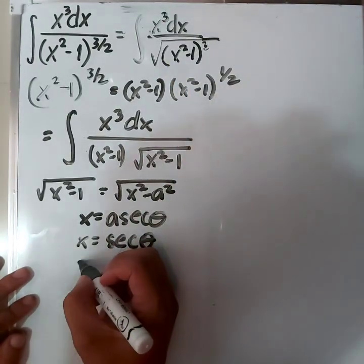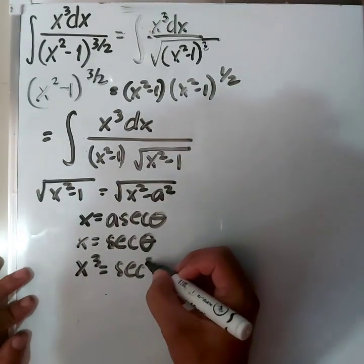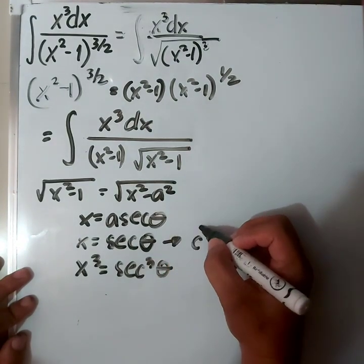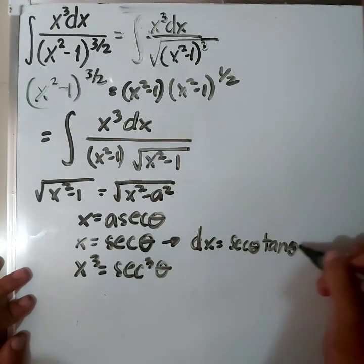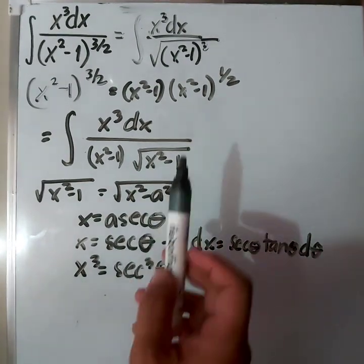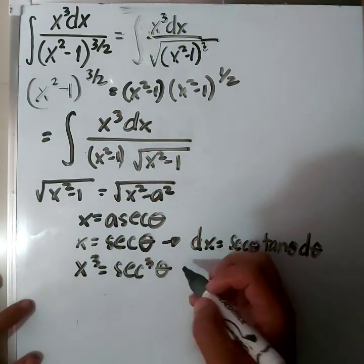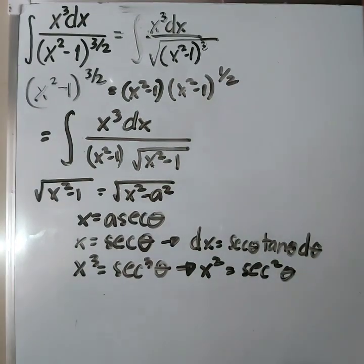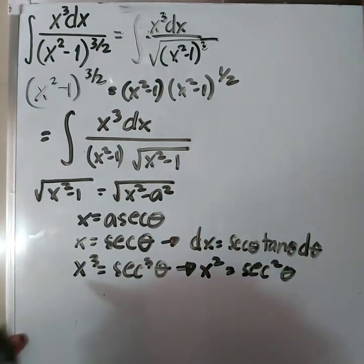We also need x cubed: x cubed equals secant cubed theta. The derivative gives us dx equals secant theta tangent theta d theta. In our given, we also need x squared: x squared equals secant squared theta. Let us now substitute all of these into our original integral of x cubed dx all over x squared minus 1 times the square root of x squared minus 1.